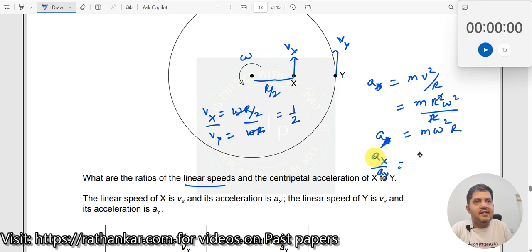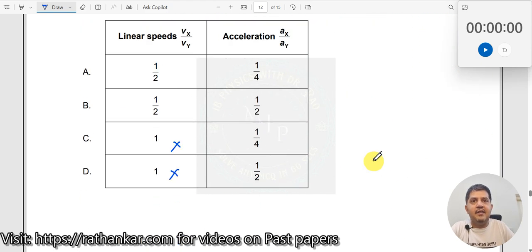Ax equals m omega² times r/2, and Ay equals m omega² times r. When you divide, m and omega² cancel, leaving 1/2. So both Vx/Vy and Ax/Ay equal 1/2, which gives us the correct option.